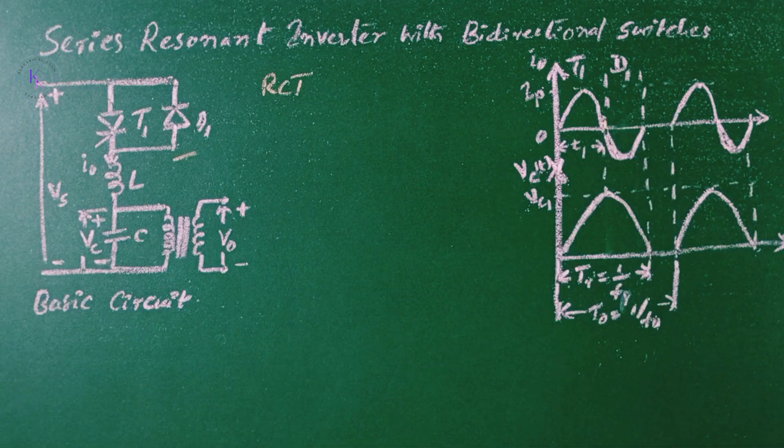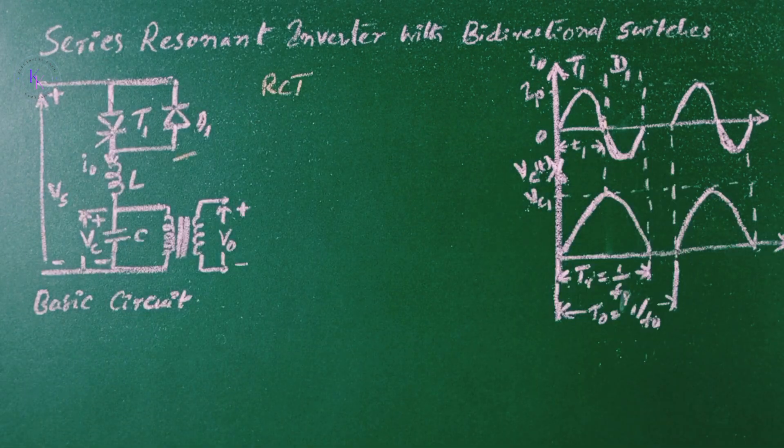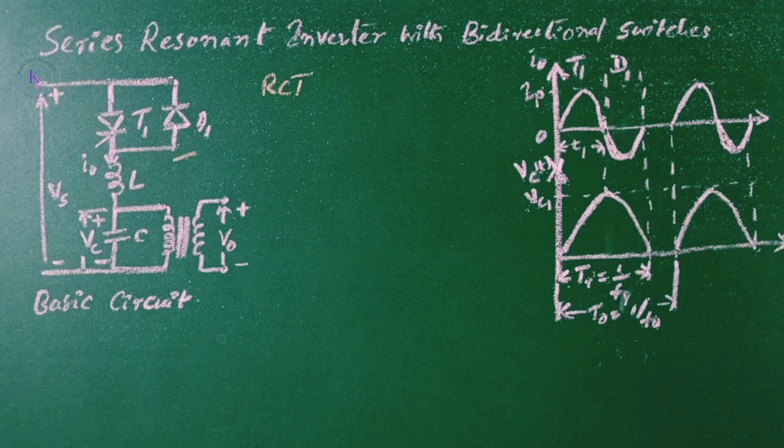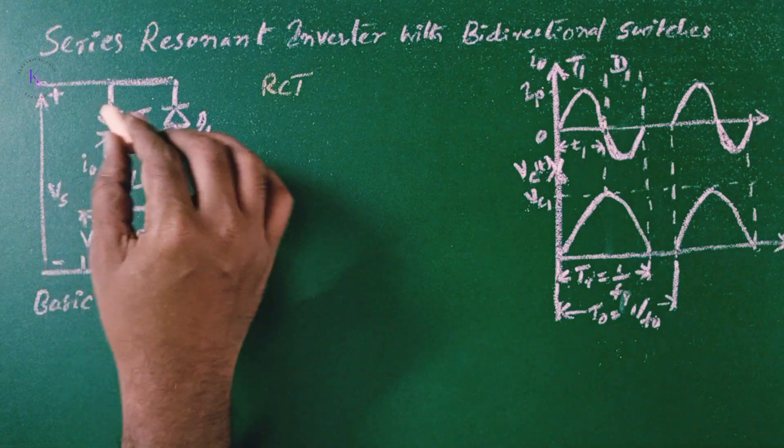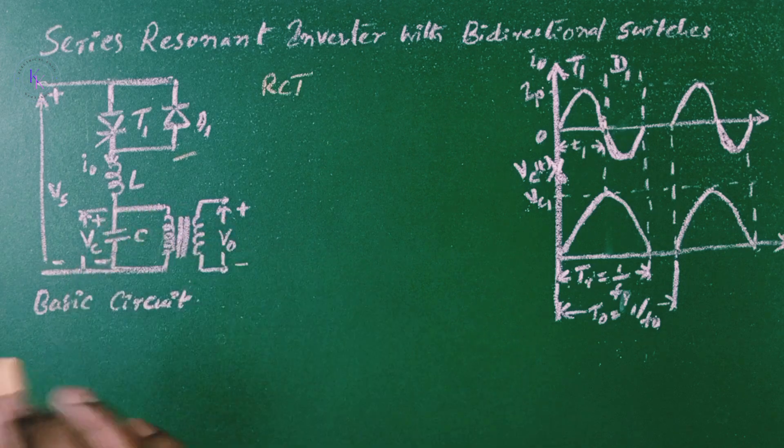However, the resonant oscillations continue through D1 until the current falls again to zero at the end of the circuit as shown in the waveform. So when the thyristor is turned on, the supply is going to flow through the thyristor L and through the load.